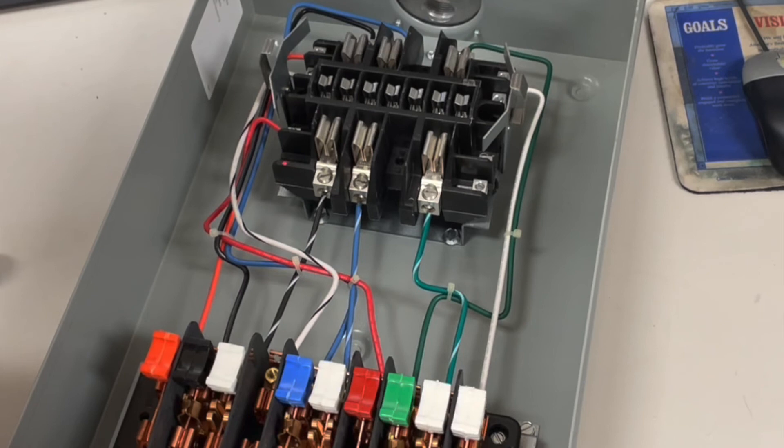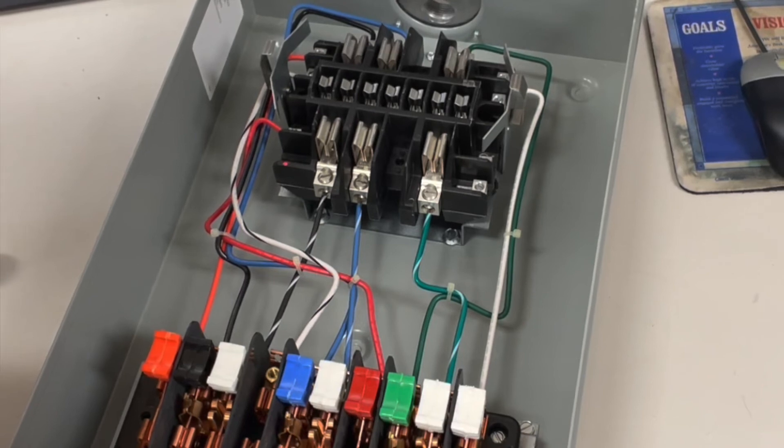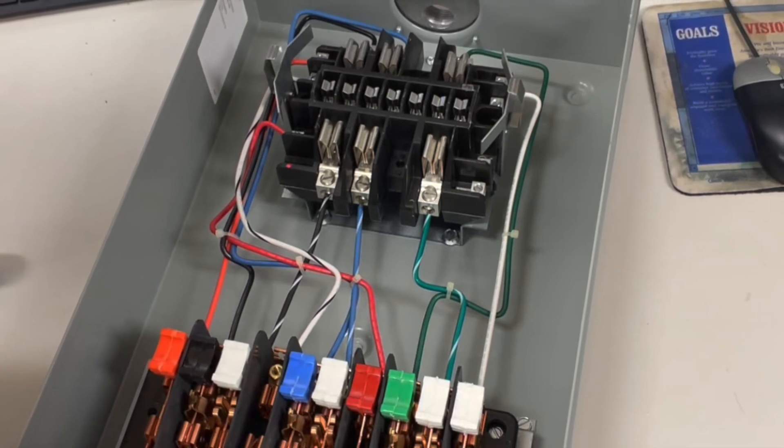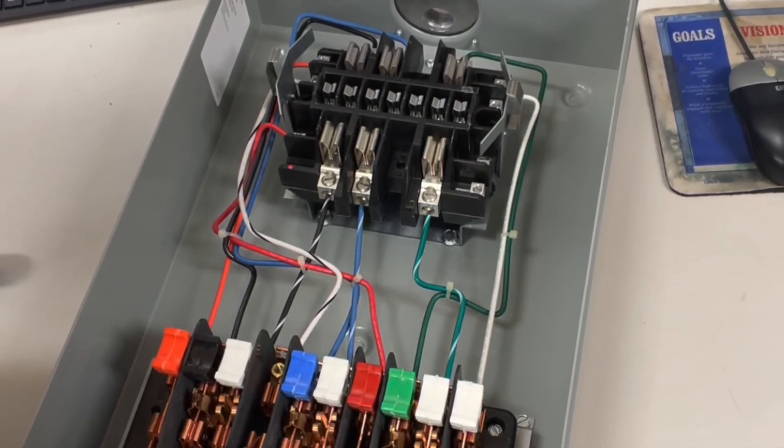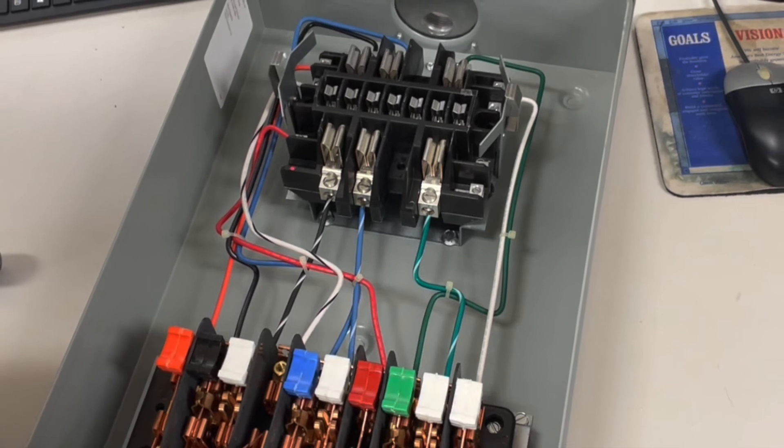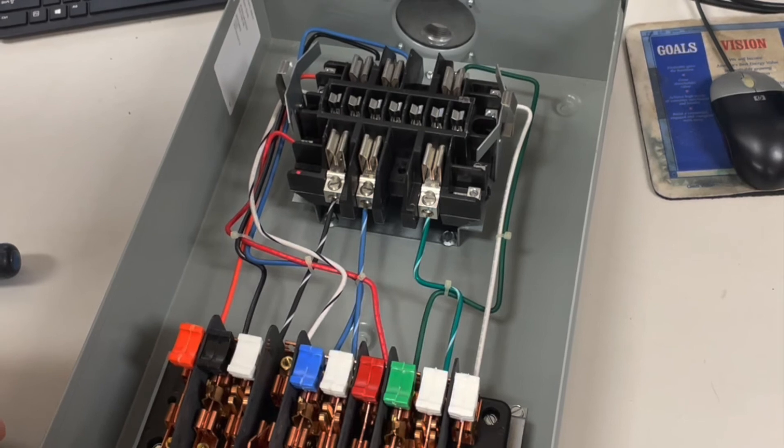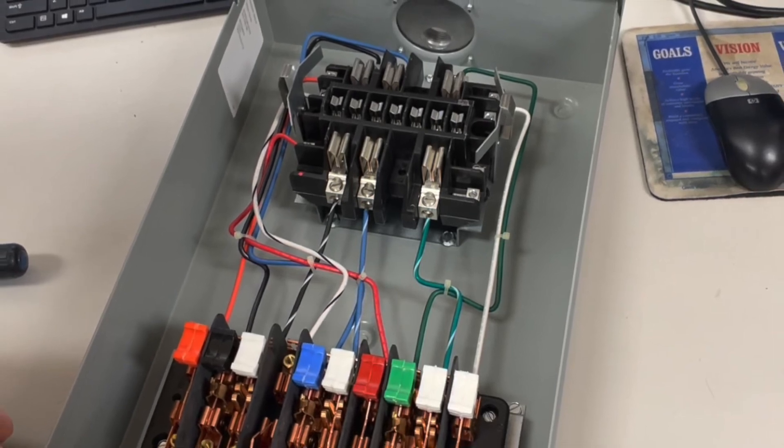Here we had a Form 9 meter in here and we lost a potential tap and we couldn't get the line crew out there to fix it. So we had a Form 6 meter. We said we just go ahead and fix it and get this meter back working and metering the customer correctly. So what had happened here was we lost B voltage.